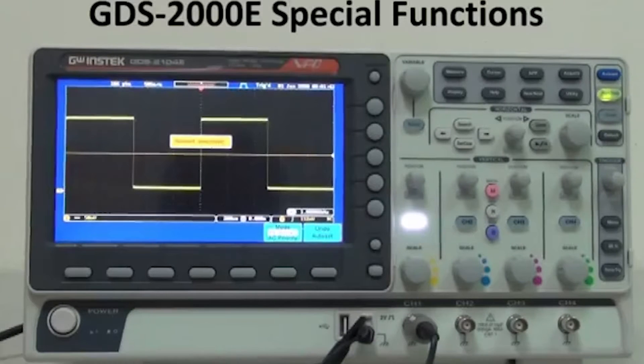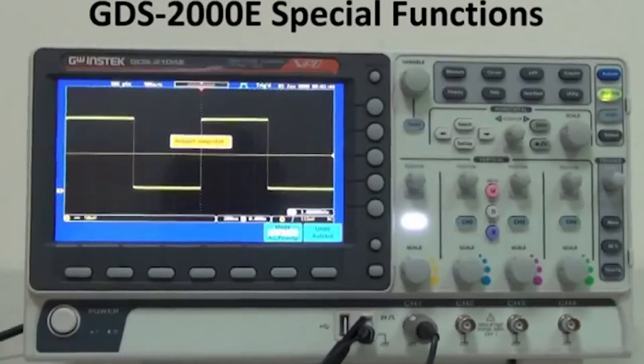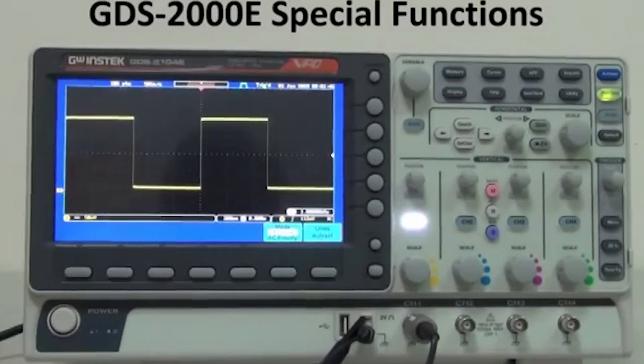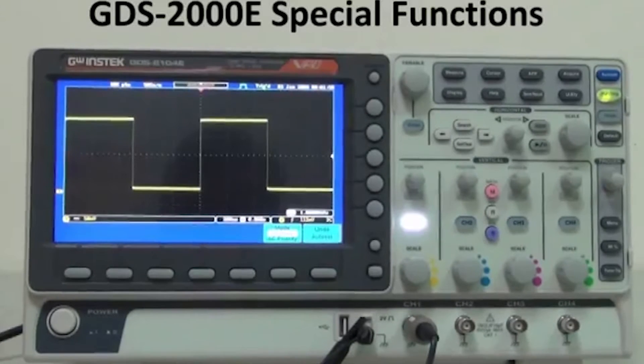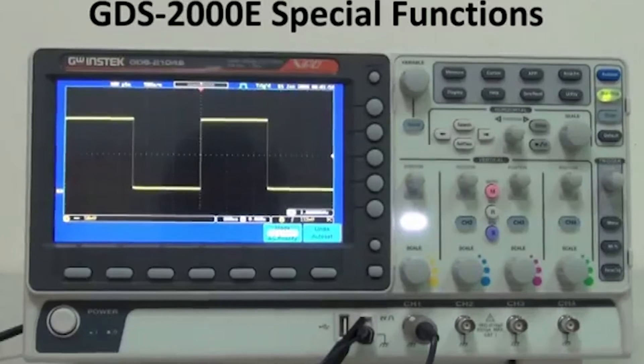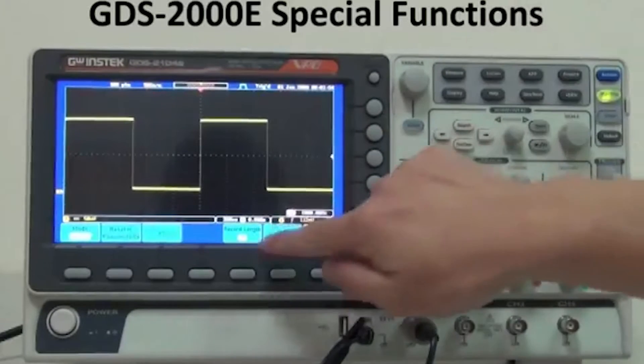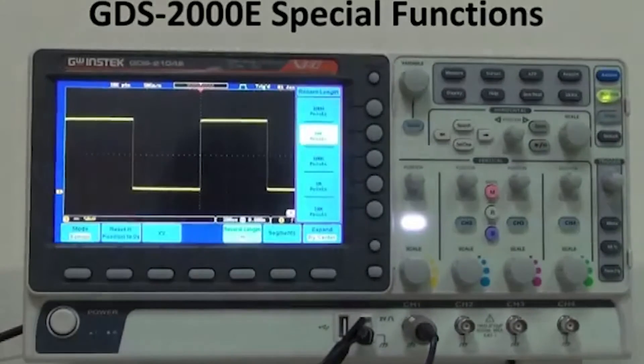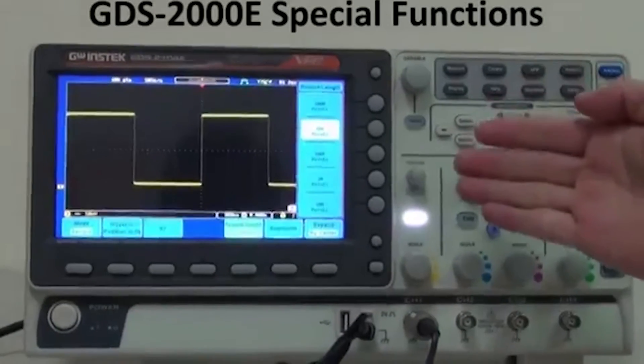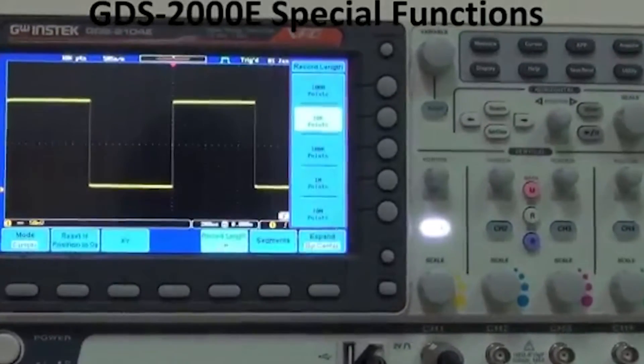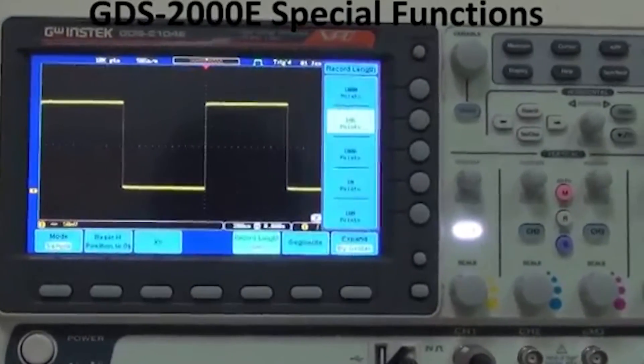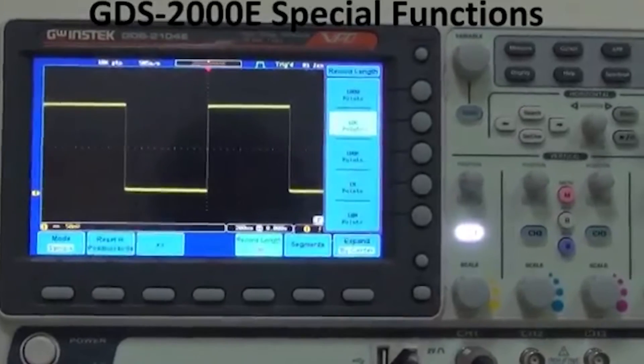Two, standard GDS-2000E provides 10 mega record length for each channel. We can select acquired memory depth from acquired record length. Selections are 1k, 10k, 100k, 1 mega, and 10 mega. Users can select suitable memory depth for specific test measurements.